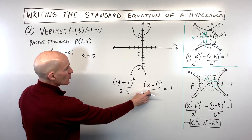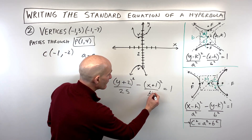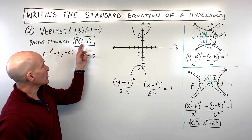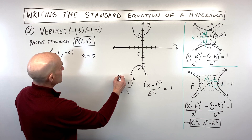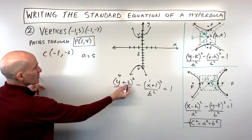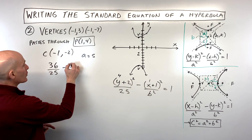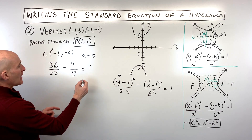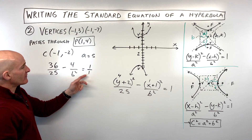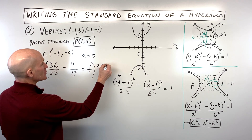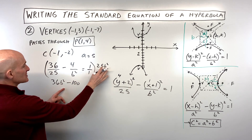Now we need to solve for b², and that's where the point (1, 4) comes in. Since (1, 4) lies on the hyperbola, it must satisfy the equation, so we substitute x = 1 and y = 4. We get (4+2)²/25 minus (1+1)²/b² = 1, which is 36/25 minus 4/b² = 1. To clear denominators, multiply through by the common denominator 25b².